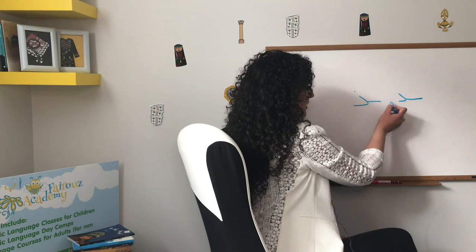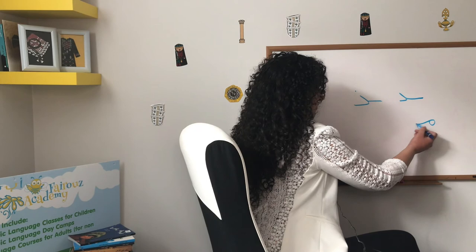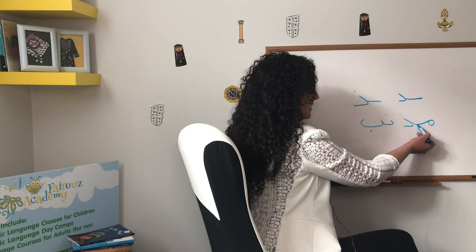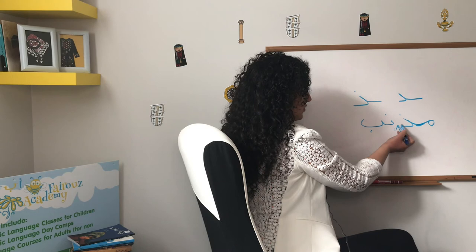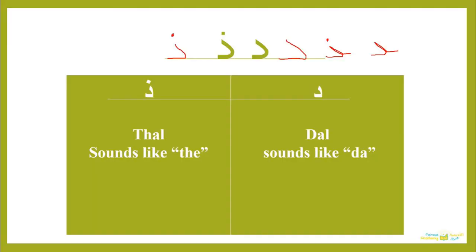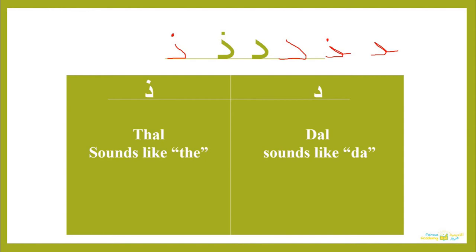See how the Dhal connects to the letter before it with a little connector, but it doesn't connect to the letter after it — there's a space there. Even if the following letter connects from both sides, it wouldn't connect with the Dal because the Dal does not connect from the left. We call them 'kicking letters' when explaining this to children — they kick the letter that comes after them and don't hold hands with it; they only connect with the letter that comes before.